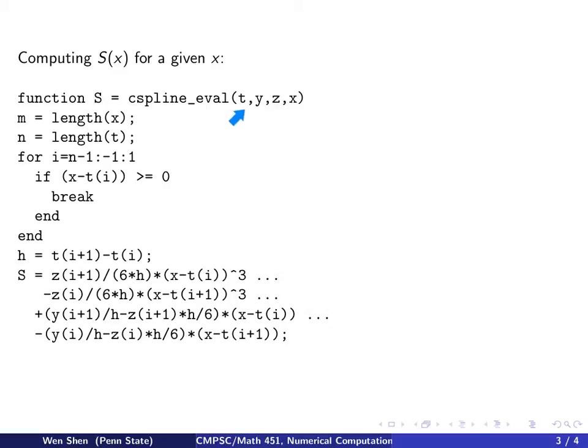You send in your data set, which is in t and y, and you're sending the z value, which is computed by the cspline function. And then you're also sending the x value. And this is the value where you would evaluate your function, s. So the spline function will be evaluated at s, and that value will be stored in this variable, s, and as the output of your code.